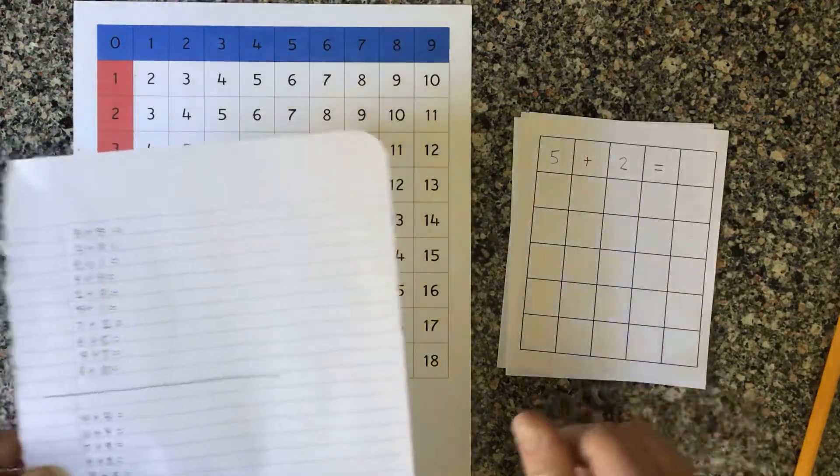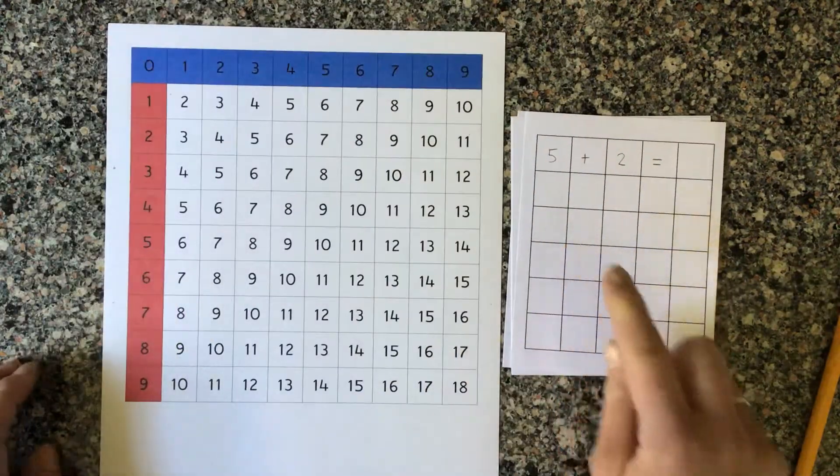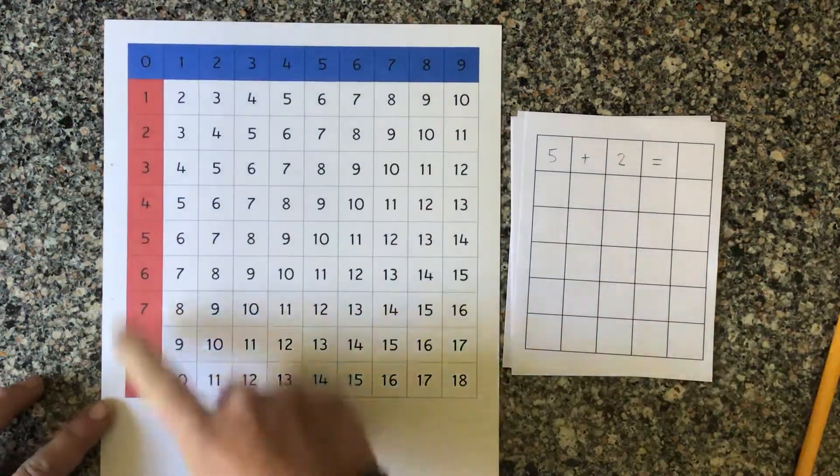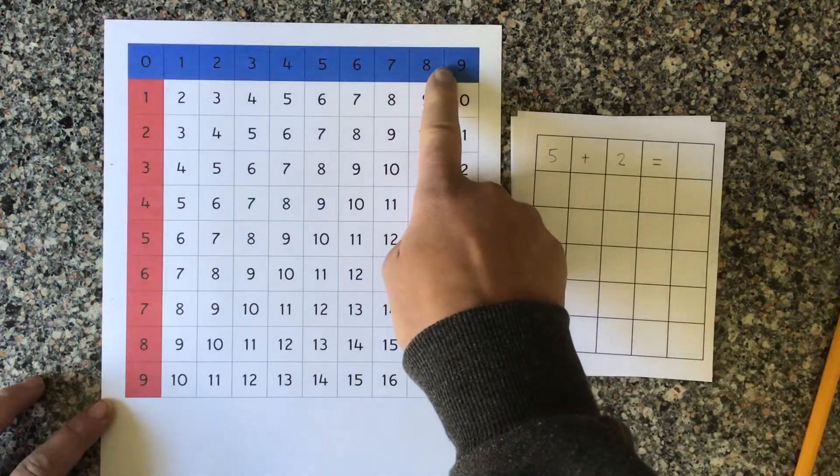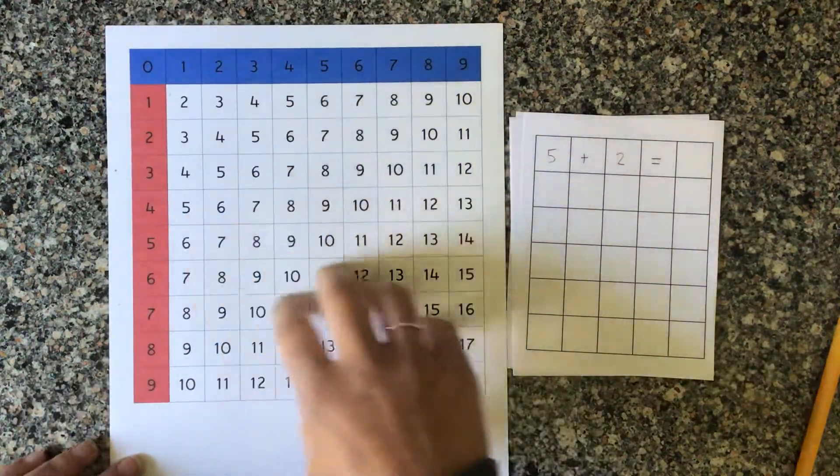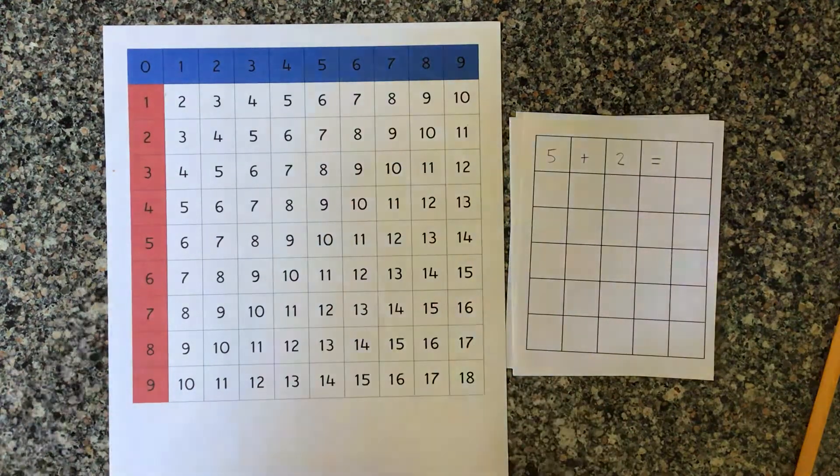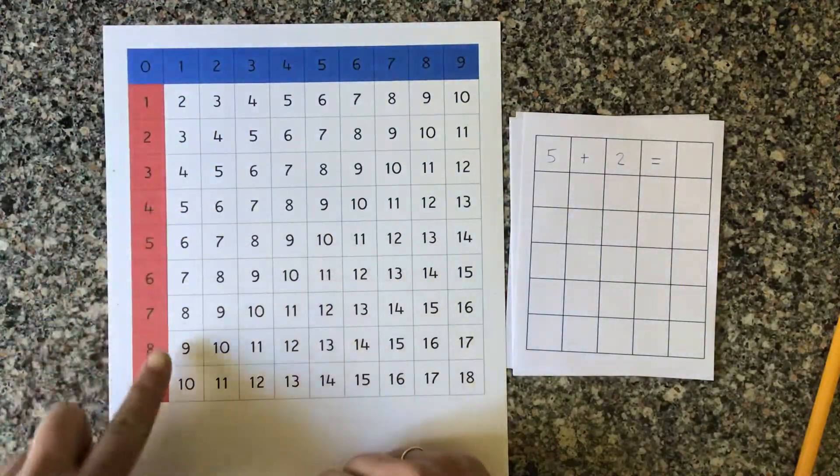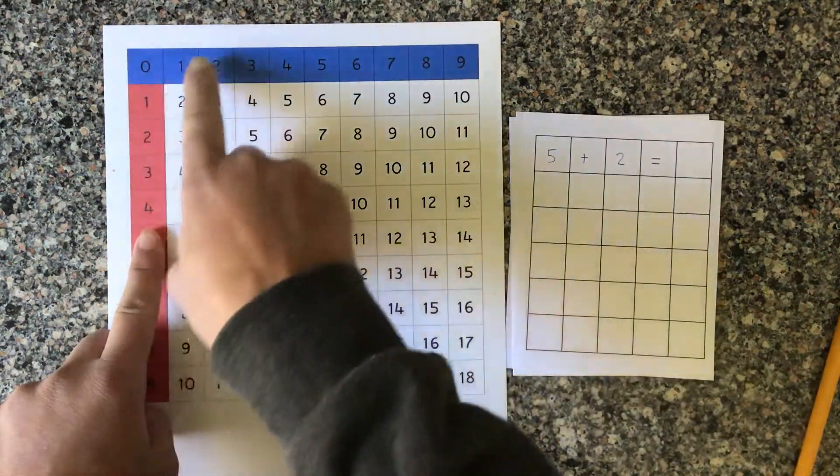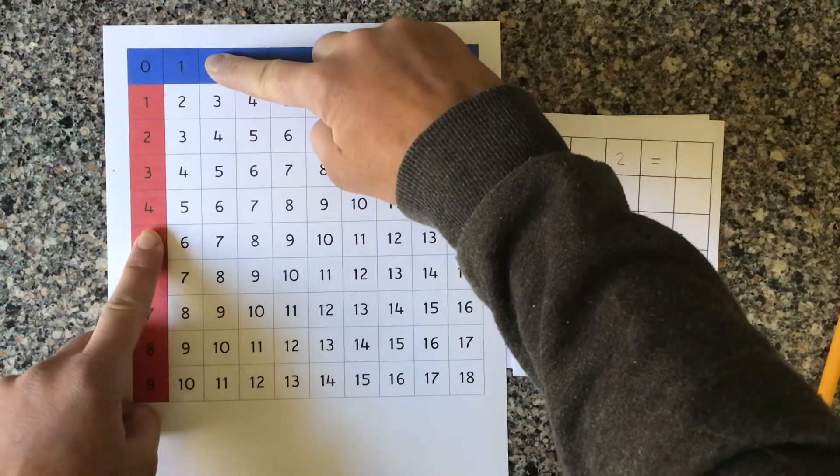So I'm going to show you how we do this. We'll start with 5 plus 2 equals. The numbers here in the red and blue columns represent the addends, and then we're going to find our answer, the sum, in here. I'm going to use my fingers and find the first addend, 5, and find our second addend, 2.